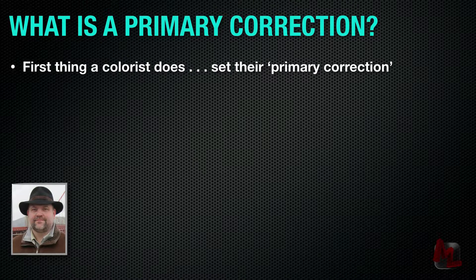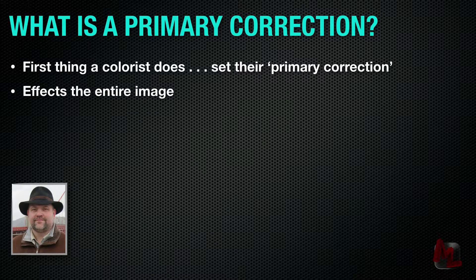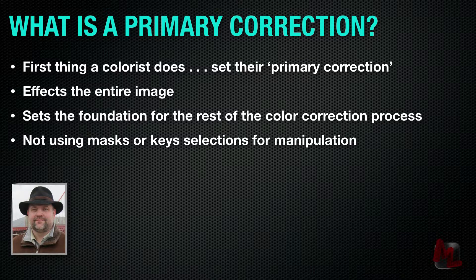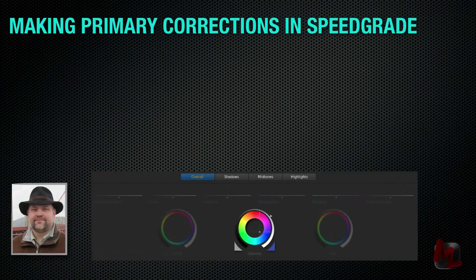What is primary color correction? It's the first thing a colorist does — it's the primary action that we do. A primary correction generally sets the foundation for the rest of the more detailed work. When we're working with primaries, we tend to be adjusting the entire image: setting the overall blacks, whites, midtones, adjusting the overall color balance. We're not using masks or keys to key out a red shirt and make it blue — we're doing big overall operations.